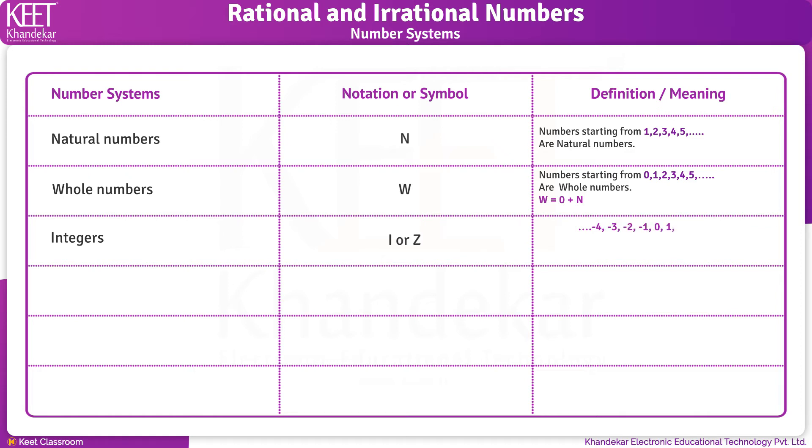...1, 2, 3, up to infinity are integers. Integers do not include fractions. So we can write I equals negative numbers plus W.